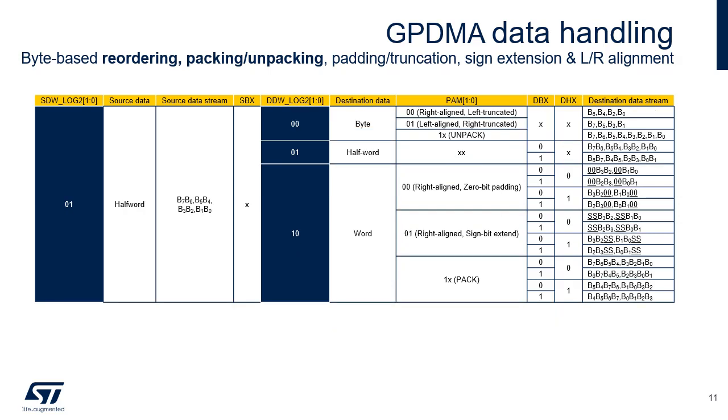This table lists the possible data handling from the source to the destination when the source data width is a 32-bit word.